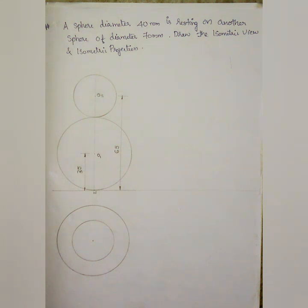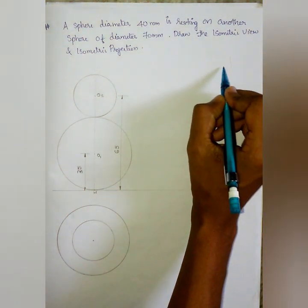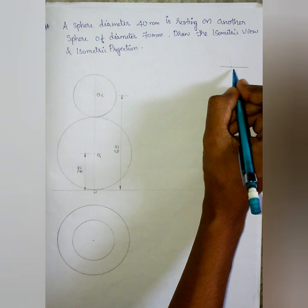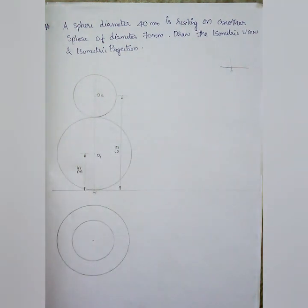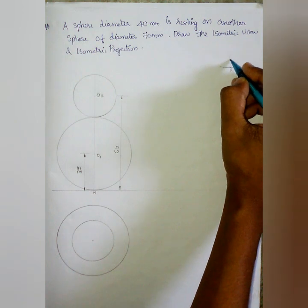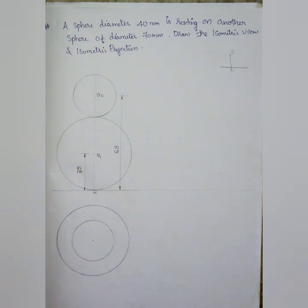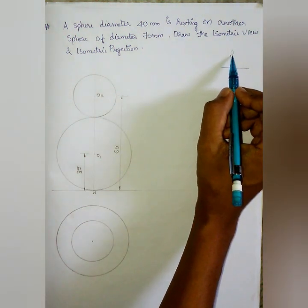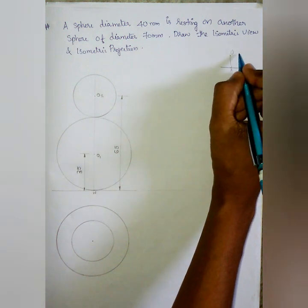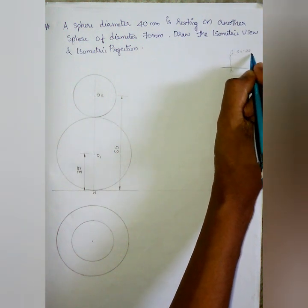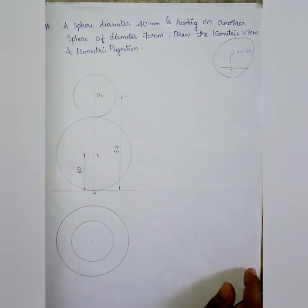Next question: a sphere of diameter 40mm is resting on another sphere of diameter 70mm — draw the isometric view and isometric projection. For the isometric view we have the circle on the side. This is a base line. The circle is marked by R and the radius, actual radius at the center point, then the enlarged radius R into 1.22.